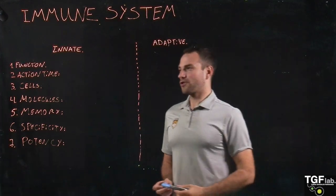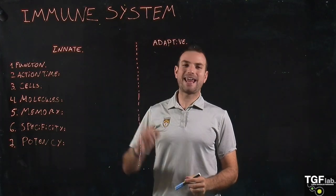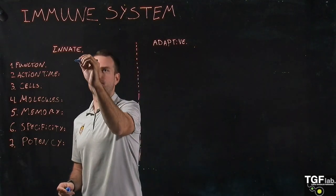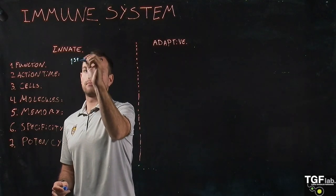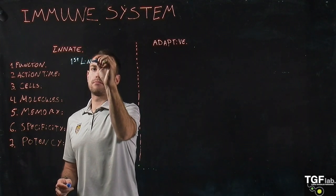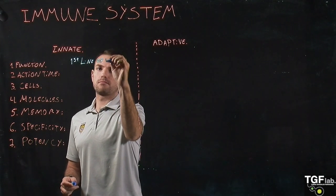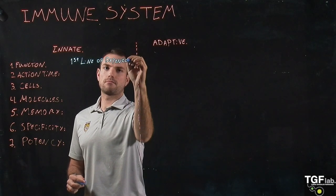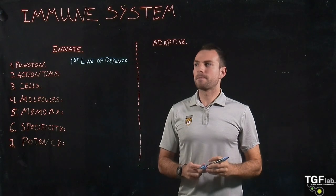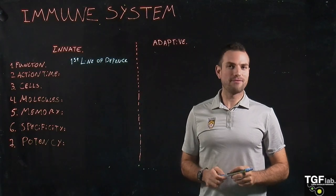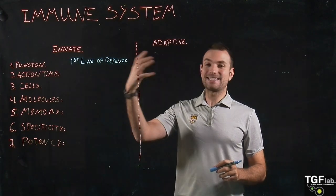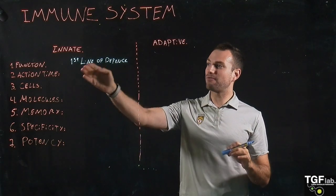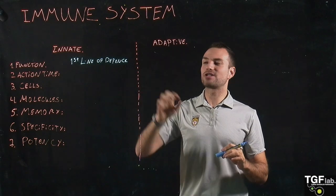In terms of function, the innate immune system is going to be the first line of defense. In comparison, the adaptive immune system is going to be the second line of defense — it targets pathogens that are able to skip the first line of defense.